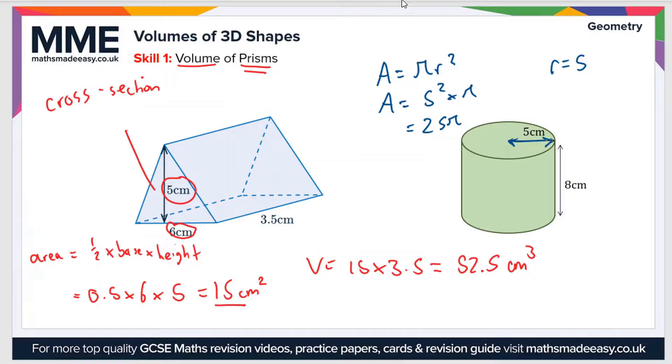And then all we do to find the volume is we multiply that by the length or the height, which is 8 centimeters. So the volume then is 8 times 25 pi, which equals 200 pi. Now sometimes that would be okay if the question says leave your answer in terms of pi. Otherwise, you could give it as a decimal, which is 628.3, and the units would be centimeters cubed again.